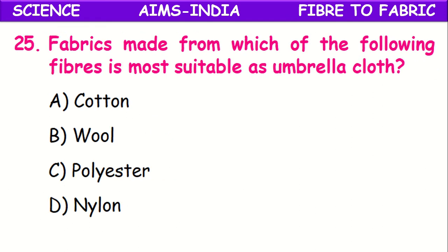Fabrics made from which of the following fibers are most suitable as umbrella cloth? The umbrella cloth should not absorb moisture or rain water. Out of the options, polyester is light in weight and won't absorb any water, so polyester is most preferable for making umbrella cloth.